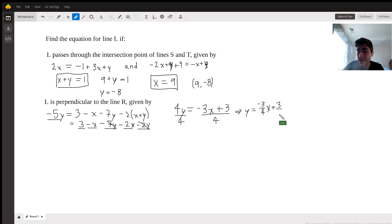So what does this tell us? We know that the line L has the point 9 negative 8 on it, and we know that the line L is perpendicular to the line y equals negative 3 fourths x plus 3 fourths. So if we want to find a line that's perpendicular to another line, then the slope is going to be the negative reciprocal. So we know that the line L is described by y equals the negative reciprocal of negative 3 fourths, which is positive four thirds x plus some y intercept b. We don't know what that is yet.